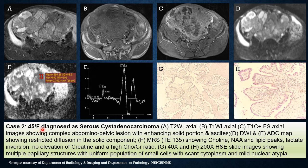The second case was a 45-year-old female diagnosed with serous cystadenocarcinoma. The T2-weighted axial, T1-weighted axial, and T1-weighted post-contrast fat-suppressed axial images all showed a complex abdominopelvic lesion with enhancing solid portion, cystic spaces, and ascites. The trace diffusion image showed intermediate signal, and the ADC map showed low values indicating restricted diffusion in the solid component. Multi-voxel MRS at TE 135 showed a choline peak, no creatine peak, an NAA peak, lactate inversion, and a lipid peak, with a high choline-creatine ratio. The 40x and 200x H&E slides showed multiple papillary projections with uniform population of small cells with scant cytoplasm and mild nuclear atypia.